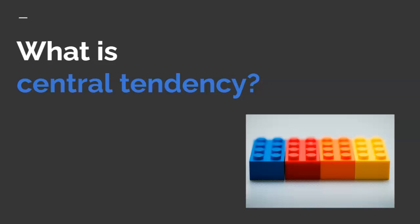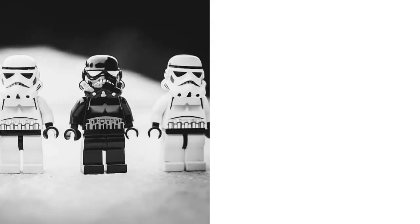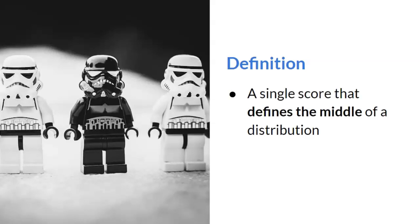Recall that Descriptive Statistics aims to describe the data set, and the easiest way to do that is by having a representative or typical value to describe the numbers. In its simplest form, central tendency is a single score that defines the middle of the distribution.